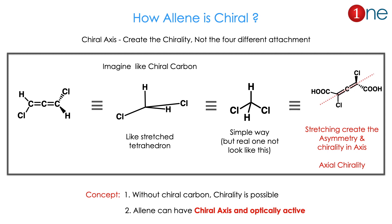How are allenes chiral? Allenes are chiral due to the chiral axis. Here allene has different attached atoms — chlorine and hydrogen. If you draw it really, it will be like a stretched tetrahedron. If you imagine it, it is like a chiral carbon — a stretched tetrahedron. Here chirality is not created by an atom, but chirality is created by the chiral axis. This is called axial chirality. Without a chiral carbon, it is chiral, and the chirality created by the chiral axis makes it optically active too.